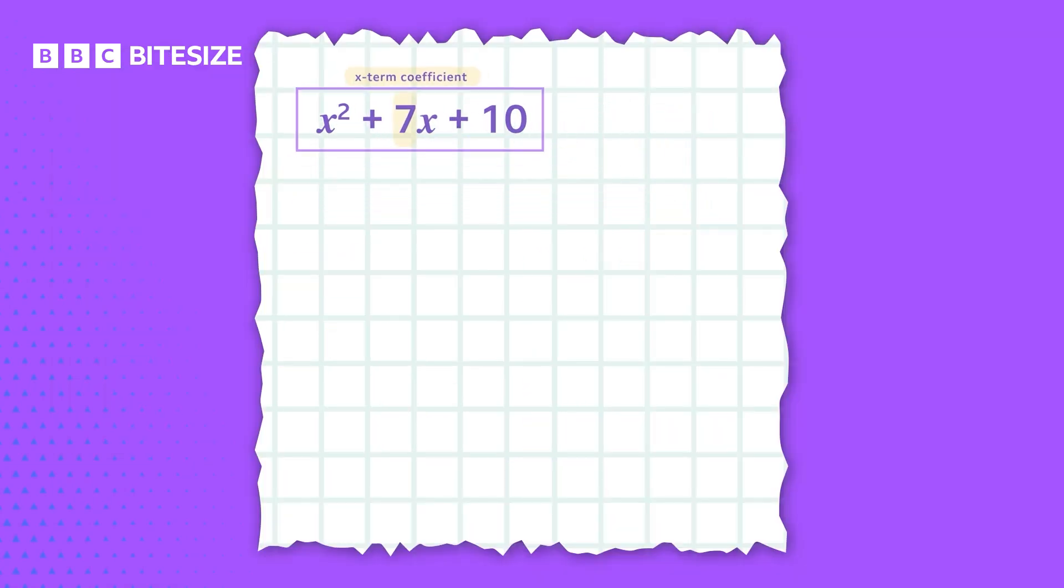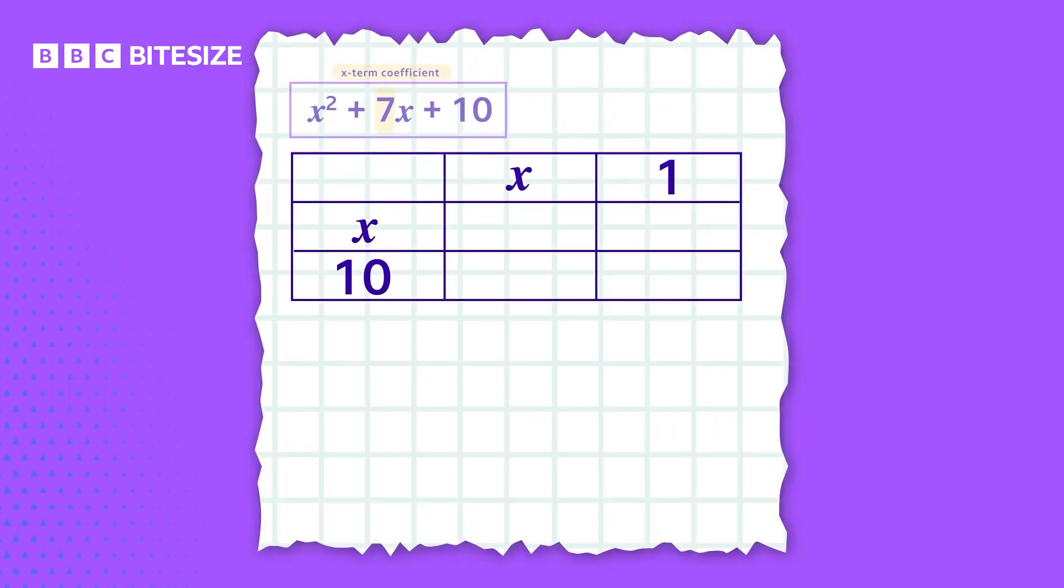If we made this mistake, let's see what happens when we multiply out the brackets to check our answer. Multiplying the terms together gives us x times x, which equals x squared, 1 times x, which gives us 1x or just x, 10 times x gives us 10x, and finally 1 times 10 gives us 10. Adding up the like x terms leaves us with x squared plus 11x plus 10.